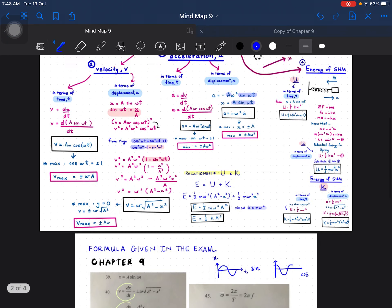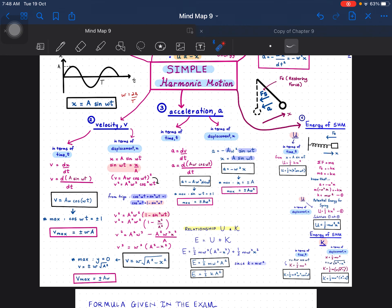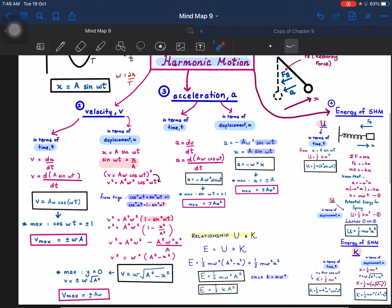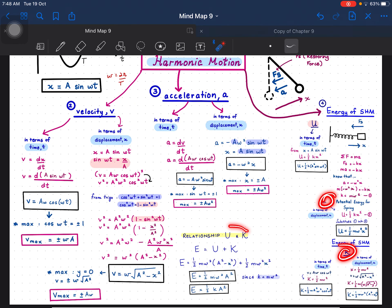Bila melibatkan tenaga, contohlah macam kamu tengok kat mind map ni kan. Kalau dikasih X in centimeter, yang dibenarkan, velocity boleh centimeter, acceleration boleh centimeter. Tapi bila masuk je dalam formula energy, tak kisahlah formula U ke ataupun K ke ataupun total. Wajib, kamu punya nilai unit untuk distance tu mesti in meter.